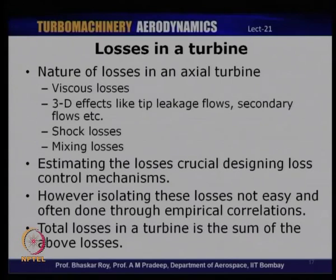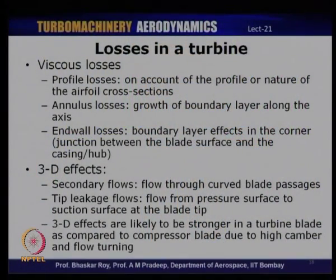To estimate and minimize losses in a turbine, one needs to isolate the contribution of each loss type — viscous losses, 3D losses such as secondary flows or tip leakage, and so on. Segregating these is not easy; there are empirical correlations for estimating different forms of losses, as discussed for compressors, which can be extended to turbines. The total loss in a turbine is the sum of all these different components.